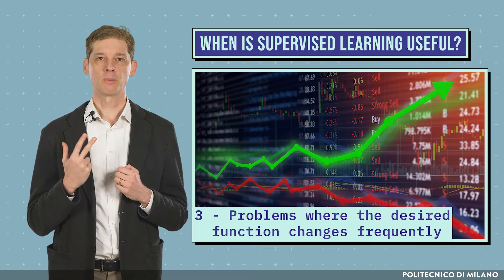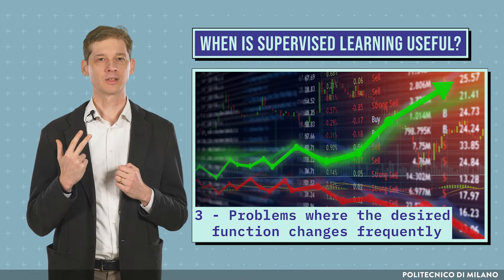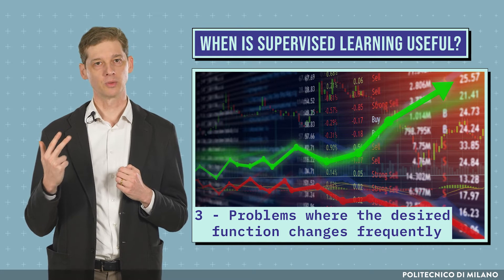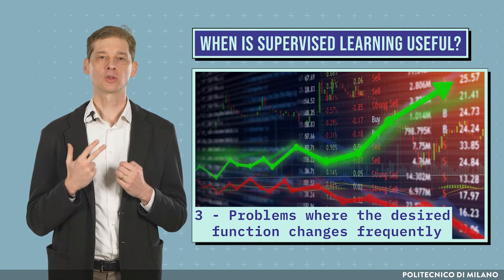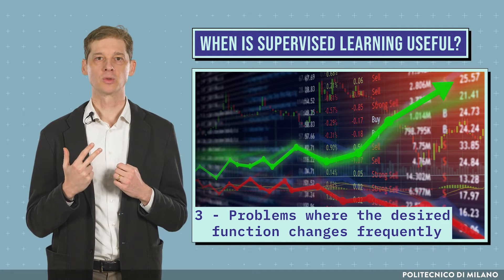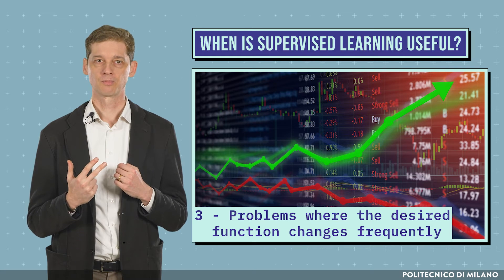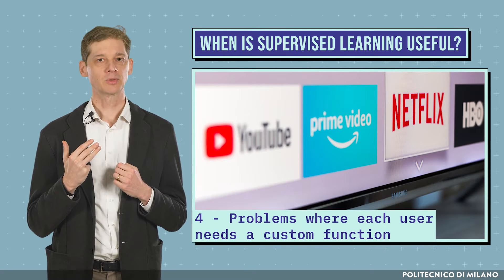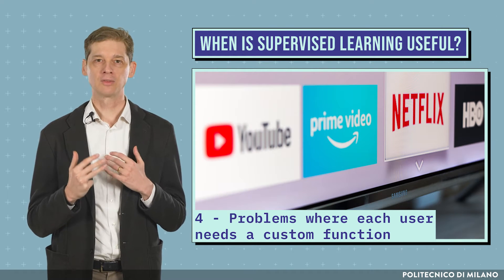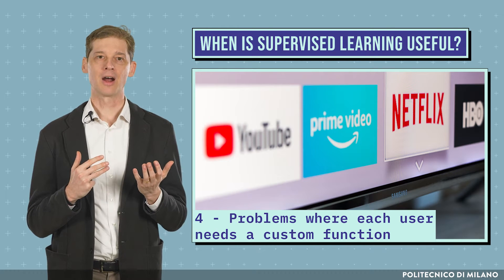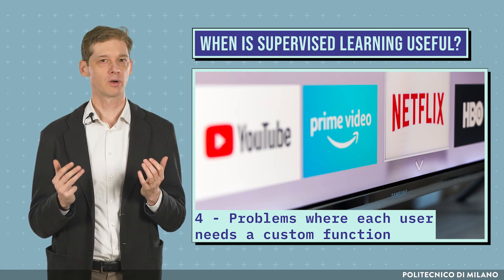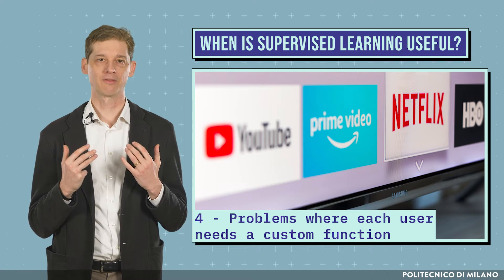Third, problems where the desired function changes frequently. Even if humans are able to write a program to do it, as the problem changes too often, it is not cost-effective. Examples include stock price predictions. Fourth, problems where each user needs a custom function. It is not cost-effective to write a custom program for each user. Examples are the recommendation of movies on a streaming platform or the development of spam filters.